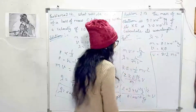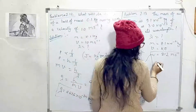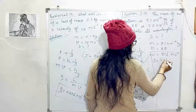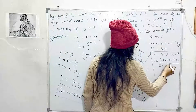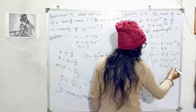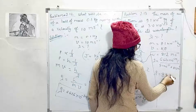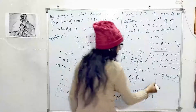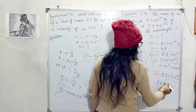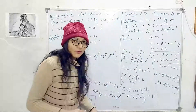Now we have all values. Substituting into lambda = h/(mv): lambda = 6.626 × 10⁻³⁴ joule·second divided by 9.1 × 10⁻³¹ kg × 812 m/s. Solving gives lambda = 8.967 × 10⁻¹⁰ meters. Converting to nanometers, this equals 0.8967 nanometers.